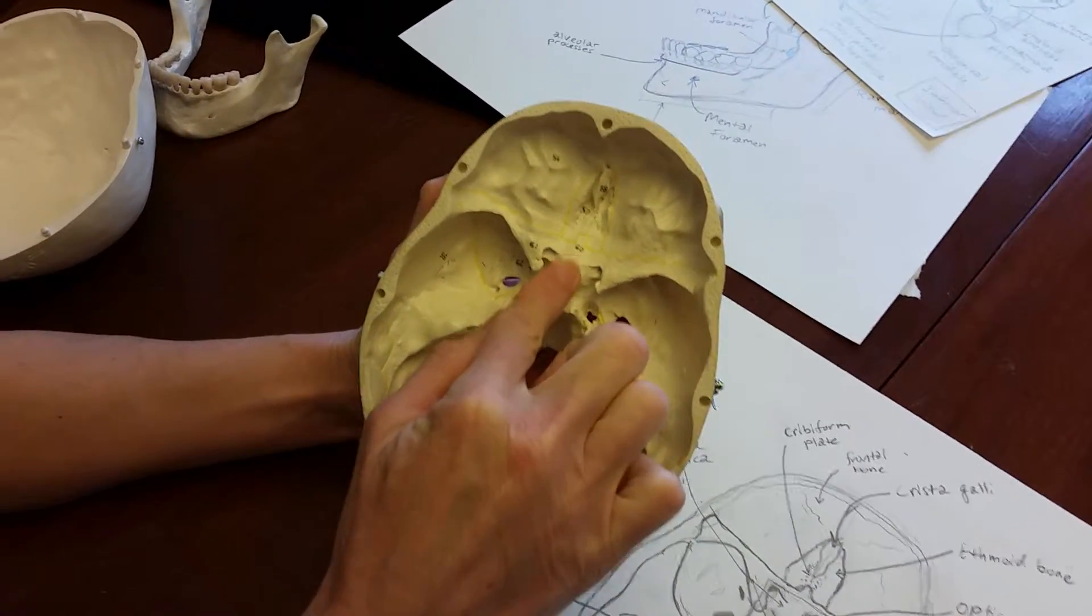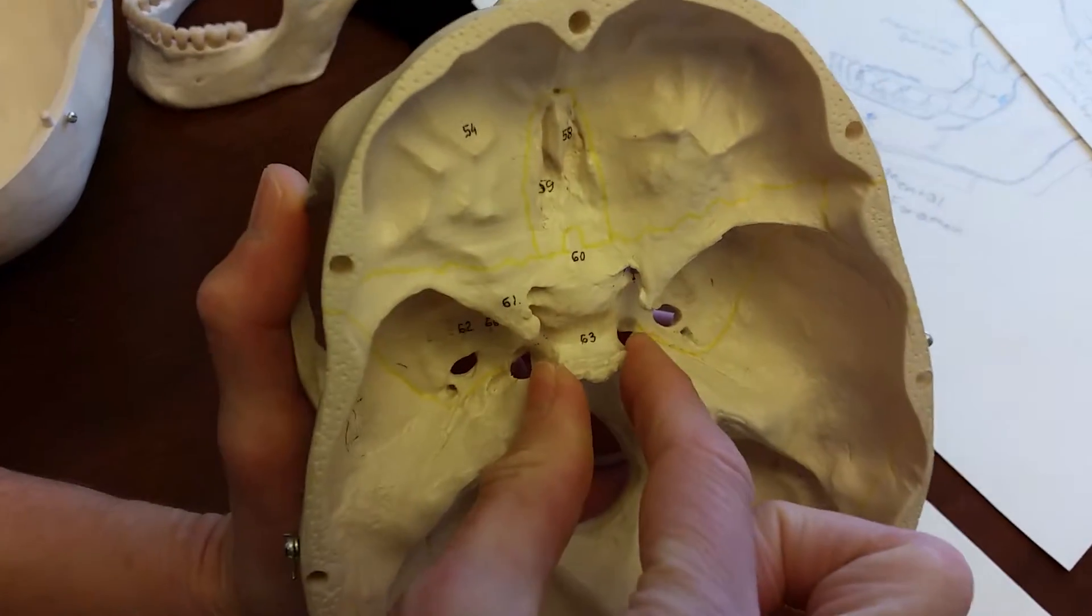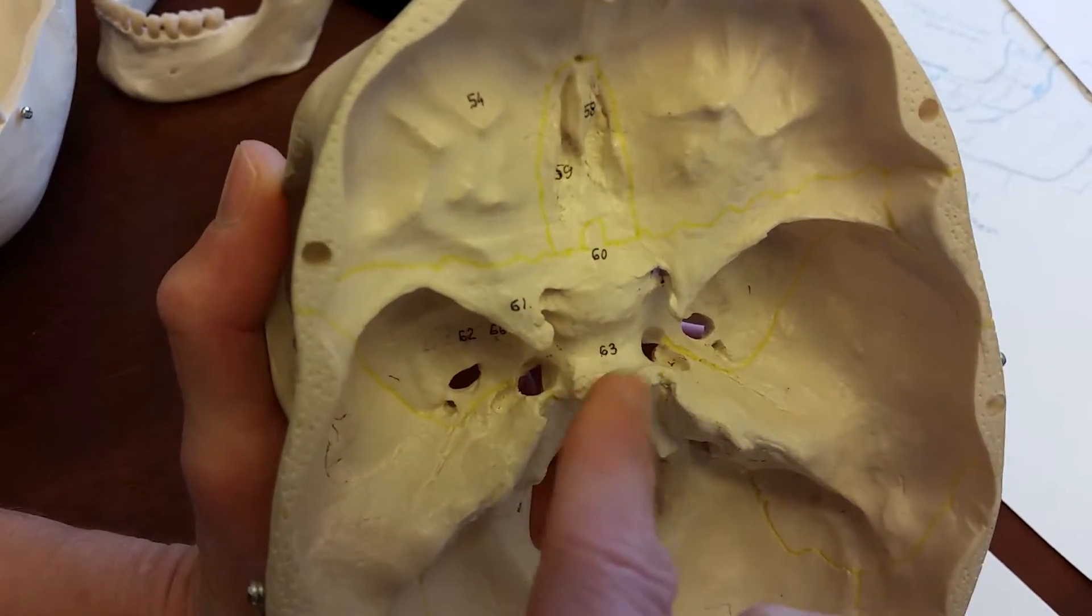Right in the center is the sella turcica, so named because it looks like a Turkish saddle. And if you look at it, indeed it looks like a saddle.